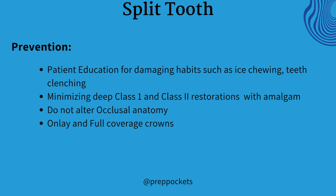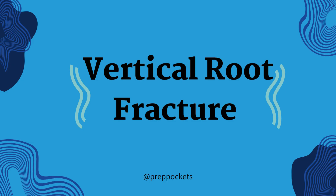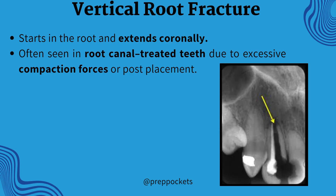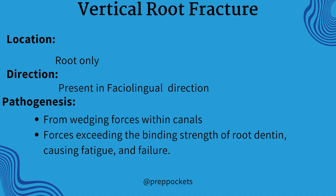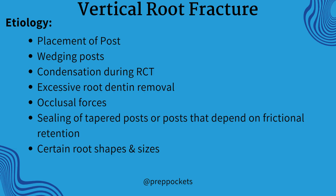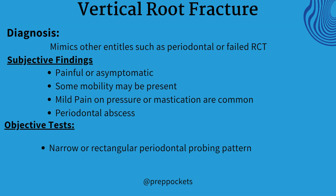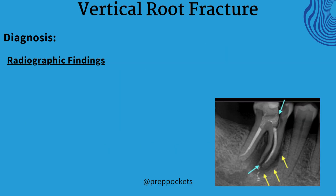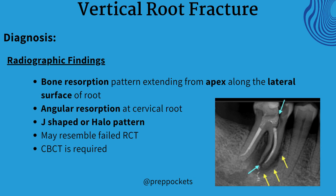Prevention of the split tooth is the same as that of a cracked tooth, which we discussed earlier. The last type is vertical root fracture, which is very important from an exam point of view. Vertical root fracture starts from the root and extends coronally. It is often seen in an RCT-treated tooth and is present in the faciolingual direction. It happens due to wedging forces in canals. These are some factors that can result in vertical root fracture — all are very important. The tooth may be painful or asymptomatic, and there may be mobility. Sometimes mild pain on biting and a periodontal abscess are present. Periodontal probing shows a narrow or rectangular probing pattern. Radiographical findings are very important and are often asked in clinical viva.